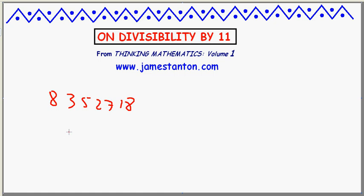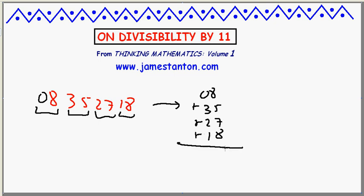8, sorry, 8, 3, 5, 2, 7, 1, 8. Suppose I want to test this divisible by 11. Suppose you don't feel like doing the alternating sum rule. I claim... Think of it as a two-digit number like before. I need to put a zero in front. And what you have to do, add up the two-digit numbers you see. 0, 8, plus 35, plus 27, plus 18.